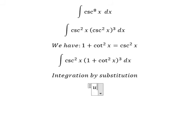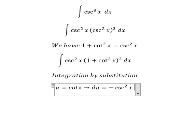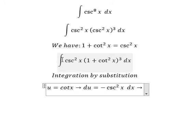I will put u equals cotangent x. So if we take the first derivative for both sides, we have negative cosecant squared x dx. Because we don't have the negative sign here, we put the negative next to the du.